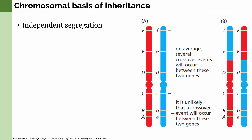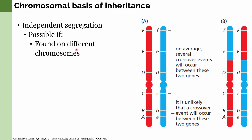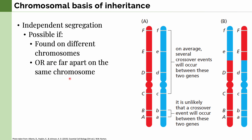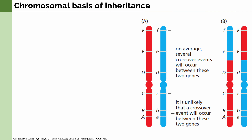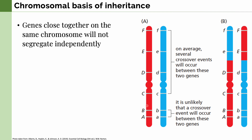We also know the chromosomal basis for independent segregation, which is possible when two alleles are found on different chromosomes. In Mendel's case, all the alleles he observed were on different chromosomes. However, independent segregation is also possible on the same chromosome if the alleles are far apart. Alleles that are very close together will not be independently segregated — they are always inherited together, which we call co-inheritance. This is because there is not enough space for crossovers to occur in that region.